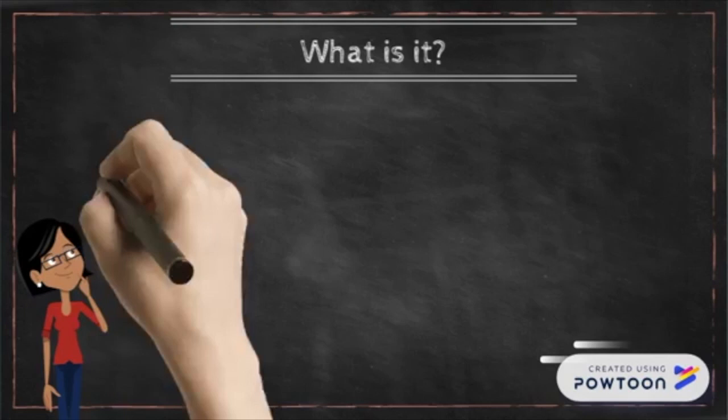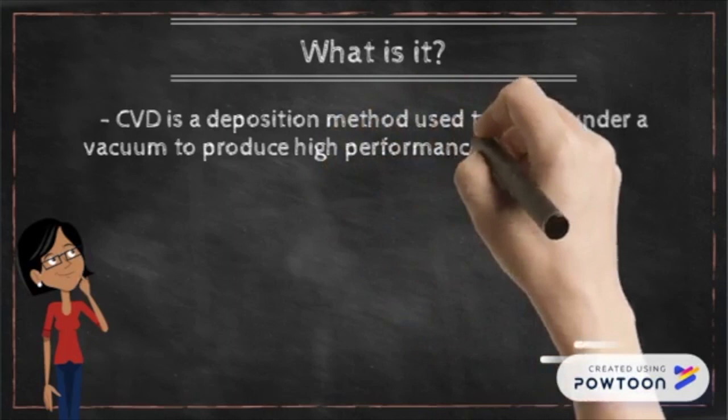Today we'll be talking about chemical vapor deposition. CVD is a deposition method used typically under a vacuum to produce high performance and quality solid materials.